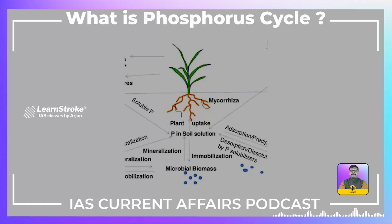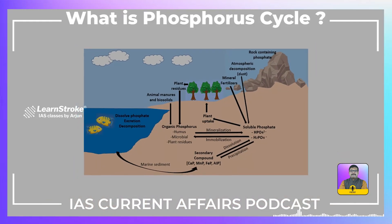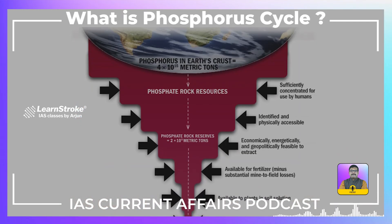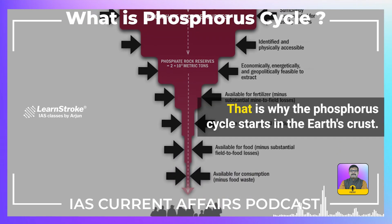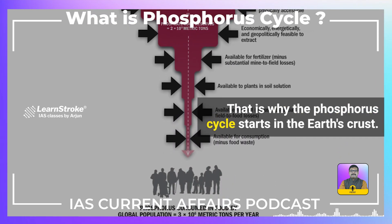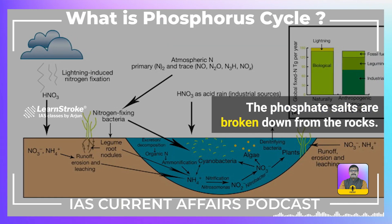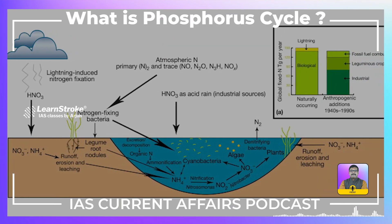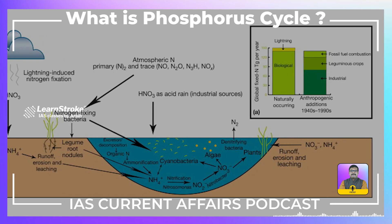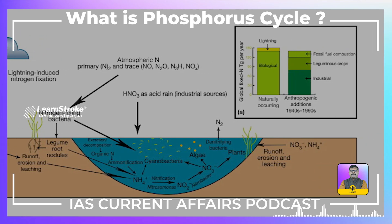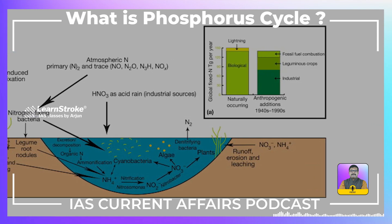Some of the important steps of the Phosphorus Cycle are: weathering, absorption by plants, absorption by animals, returning to the environment through decomposition, and again weathering. Phosphorus is found in rocks in abundance, and that is why the Phosphorus Cycle starts in the earth's crust. The phosphate salts are broken down from the rocks and washed away into the ground, where they mix in the soil.